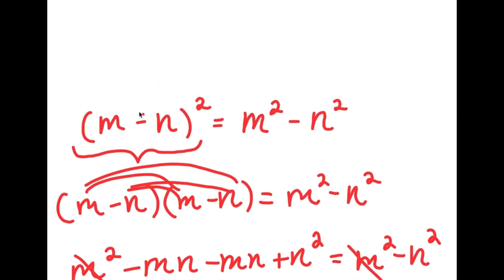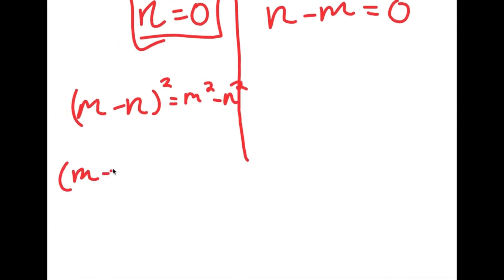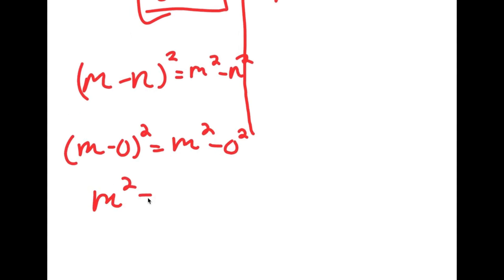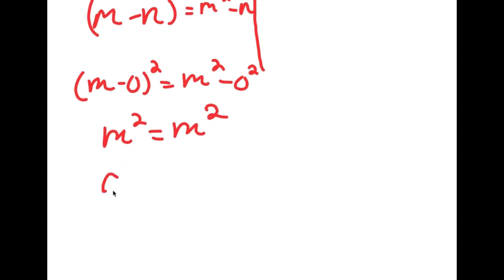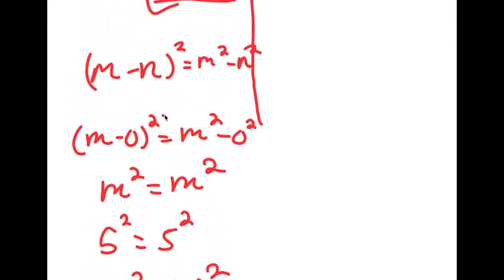Going back to our original equation, we have m minus n squared is equal to m squared minus n squared. If n equals 0, I get m minus 0 squared is equal to m squared minus 0 squared, which turns into m squared is equal to m squared, meaning m can really equal any number. If m equals 5, then I have 5 squared is equal to 5 squared. So m can equal any number if n is 0.